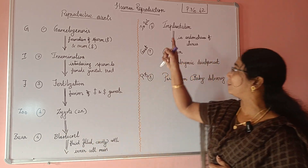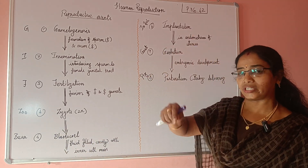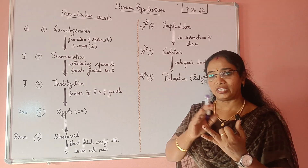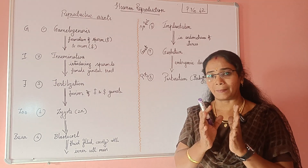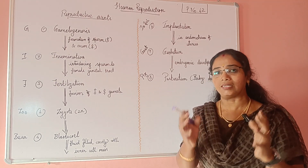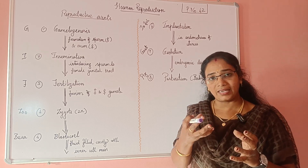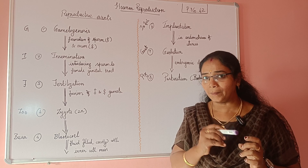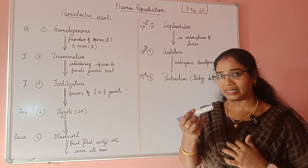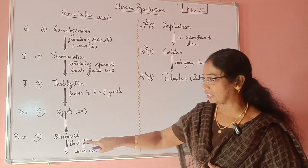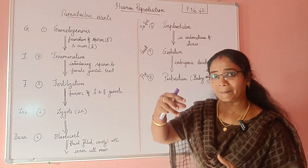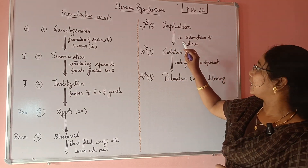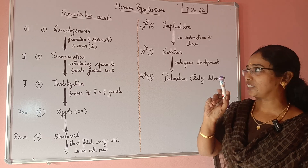The next process is implantation. Implantation starts from the zygote. The zygote undergoes division and we reach the blastocele stage. In implantation, we are looking at the uterus — specifically the endometrium. In the blastocele stage, it is embedded into the endometrium of the uterus.